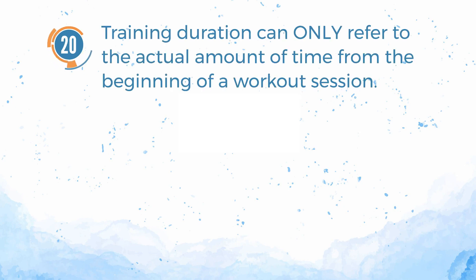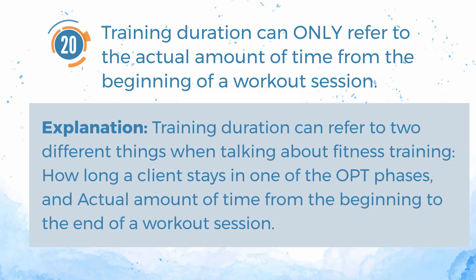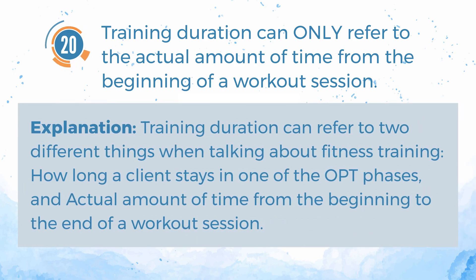Number 20. Training duration can only refer to the actual amount of time from the beginning of a workout session. A. True. B. False. The answer is B. False. Explanation: Training duration can refer to two different things: how long a client stays in one of the OPT phases, and the actual amount of time from the beginning to the end of a workout session.